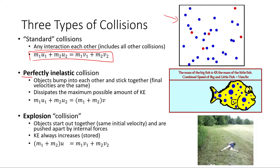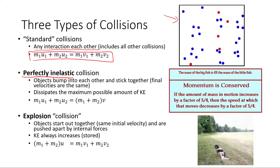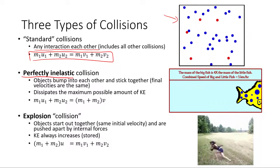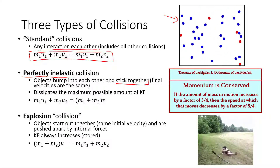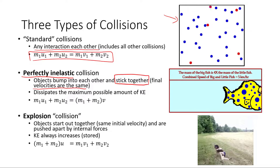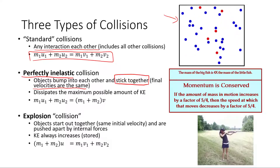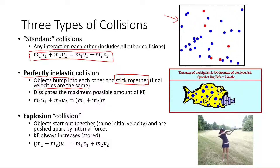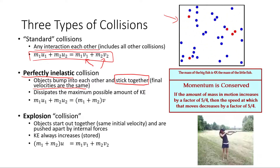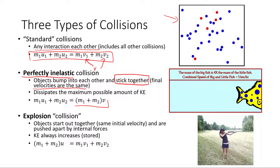One special case is called a perfectly inelastic collision. Think of elastic as very bouncy — so inelastic means it's not going to bounce. In a perfectly inelastic collision, objects bump into each other and stick together, which means their final velocities are the same. A lot of kinetic energy is dissipated. Since the final velocities are equal, we can write them both as a single variable v, factor it out, and the right side of our equation simplifies.